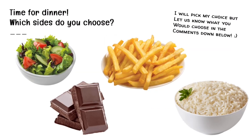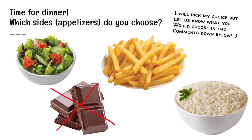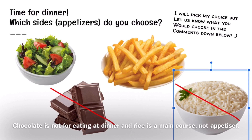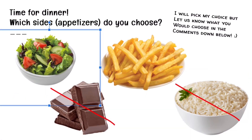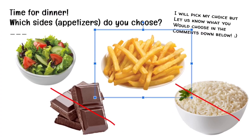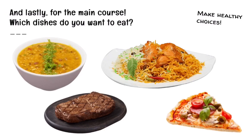Now it's time for dinner. I'm going to pick my choice, but let us know what you would choose in the comments down below. So let's pick our appetizers first. I wouldn't go with chocolate because chocolate is a sweet thing and in appetizers we don't eat something sweet — that's in dessert, which is after dinner. And we're not going to choose rice either because that is part of the main course, the main meal, not the appetizer. So I'm going to go with salad as a side dish and a bit of chips. Remember, chips are also unhealthy, so don't eat too much of those.